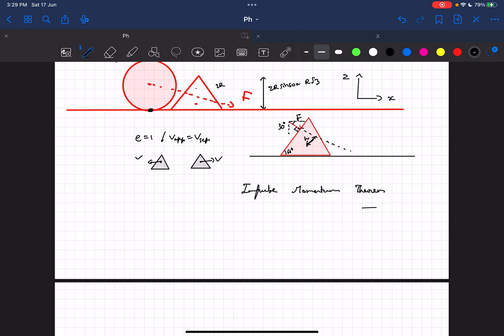First of all let's write the impulse due to force F. We are writing it along the x direction in this case. The impulse due to force F will be F cos 30 because we have to write the horizontal component of it.